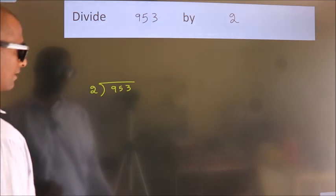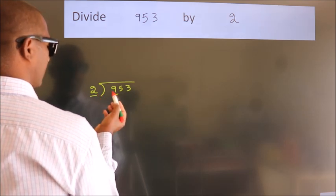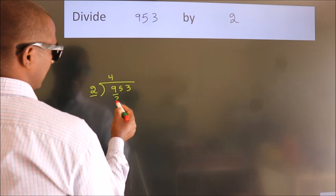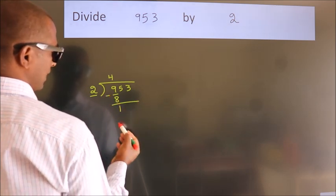Next, here we have 9, here 2. A number close to 9 in the 2 table is 2 times 4 equals 8. Now we should subtract. We get 1.